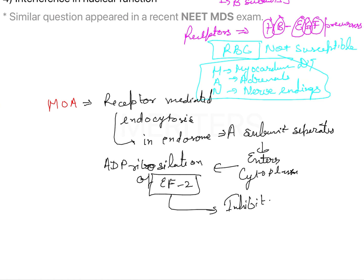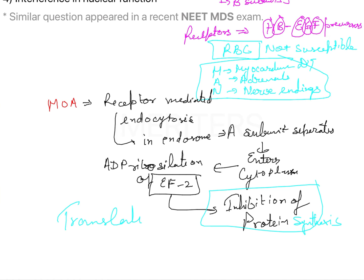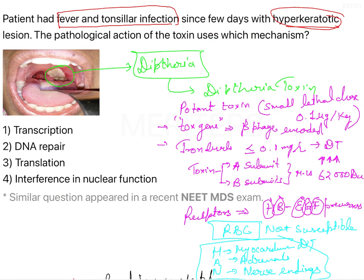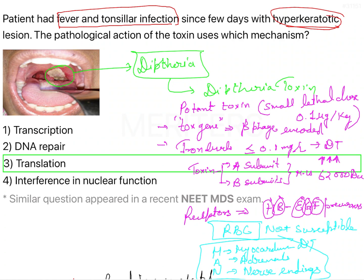This ADP ribosylation of EF2 leads to inhibition of protein synthesis. Since protein synthesis from ribosomes is the process of translation, the diphtheria toxin ultimately inhibits translation. Therefore, the answer to the question is inhibition of translation.